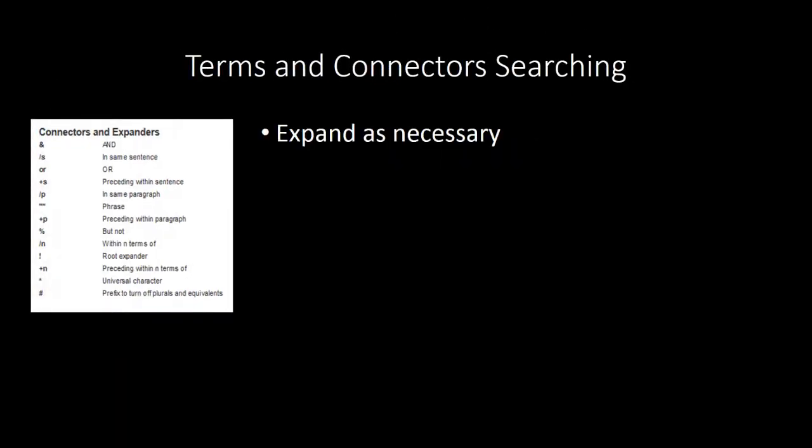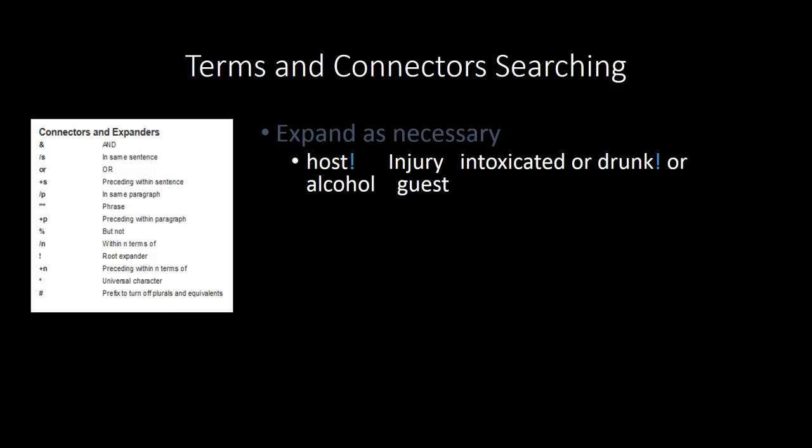Next, we'll consider alternatives to the same terms using root expanders like an exclamation point or a question mark, depending on the service, and universal characters like an asterisk to pick up variations on the same term. For example, the term host followed by an exclamation point on Westlaw would retrieve both host and hostess, because the exclamation point indicates the user is looking for the word host and any word that has host as its root, like hosting or hostess. Note that host! would also pick up hostile (H-O-S-T-I-L-E), so you have to be careful when you use root expanders. Similarly, drunk! would pick up drunk, drunkard, and drunken — so the root drunk would be an effective way to expand that term.